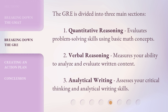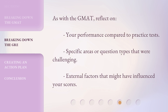The GRE is divided into three main sections: 1. Quantitative Reasoning — evaluates problem-solving skills using basic math concepts. 2. Verbal Reasoning — measures your ability to analyze and evaluate written content. 3. Analytical Writing — assesses your critical thinking and analytical writing skills. As with the GMAT, reflect on your performance compared to practice tests, specific areas or question types that were challenging, and external factors that might have influenced your scores.